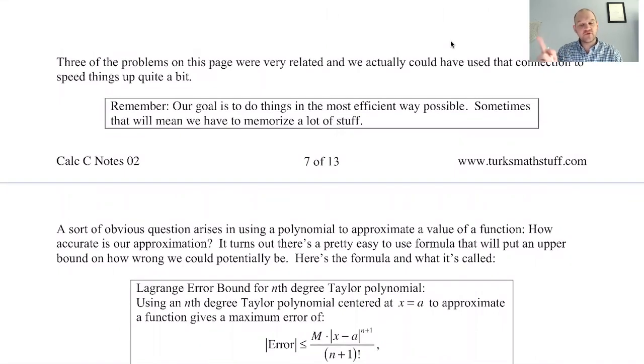A tangent line is the first degree Taylor polynomial. It matches the value of the function and the first derivative. A Taylor polynomial is going to go farther, and it'll match the value of the second derivative, the third derivative, up to whatever degree polynomial you're dealing with. It'll match the derivatives of your given function or the function you're approximating at the center. The center is like the point of tangency for a tangent line, but it's now just called the center.